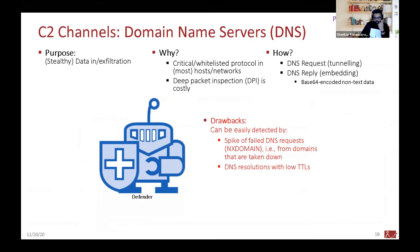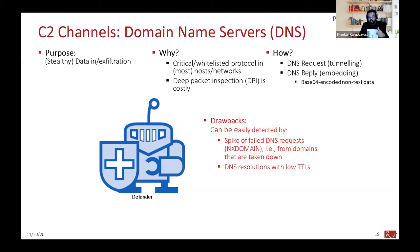The drawback of DNS C2 channels is that they can be detected by spikes in failed DNS requests. Looking at NX domain replies — domains that don't exist — and DNS resolutions with very low TTLs can indicate usage of DNS as a C2 channel. Unless you can distinguish normal from abnormal DNS records, it's very difficult to prevent such DNS-based botnet attacks.